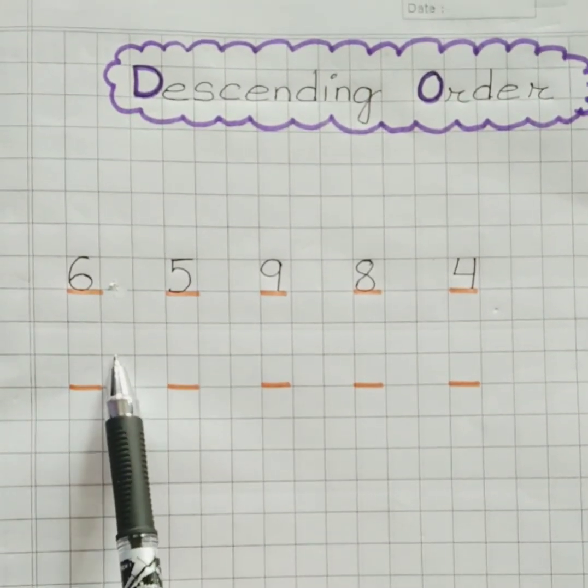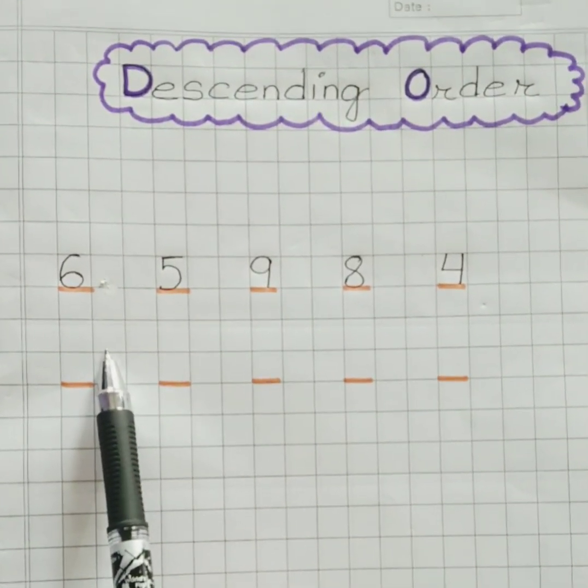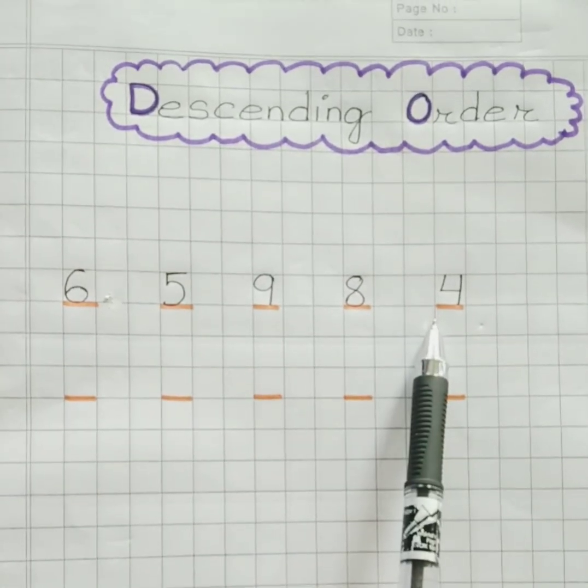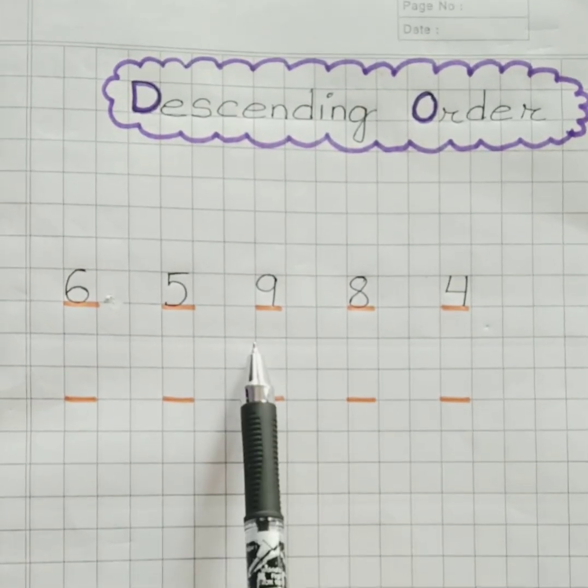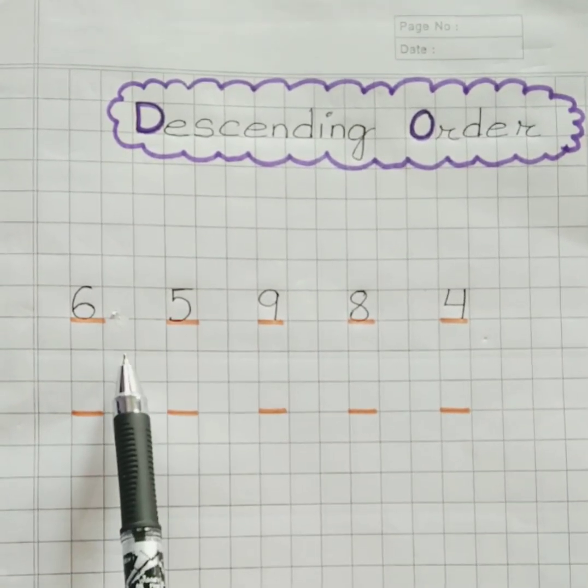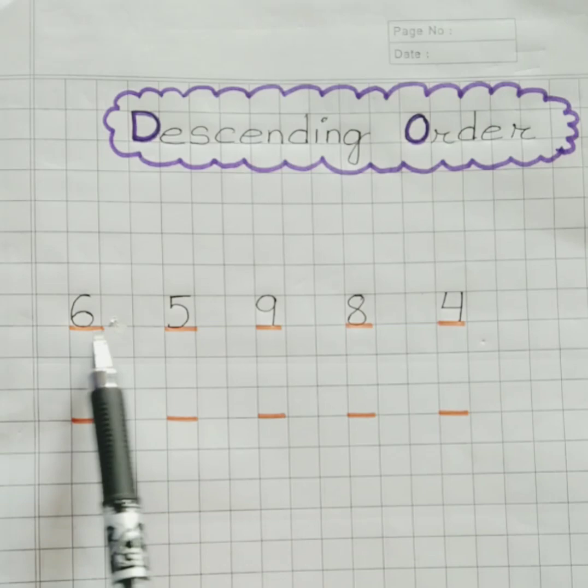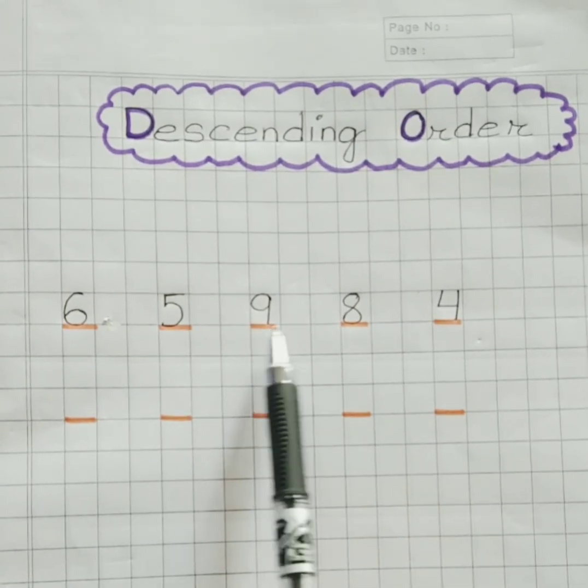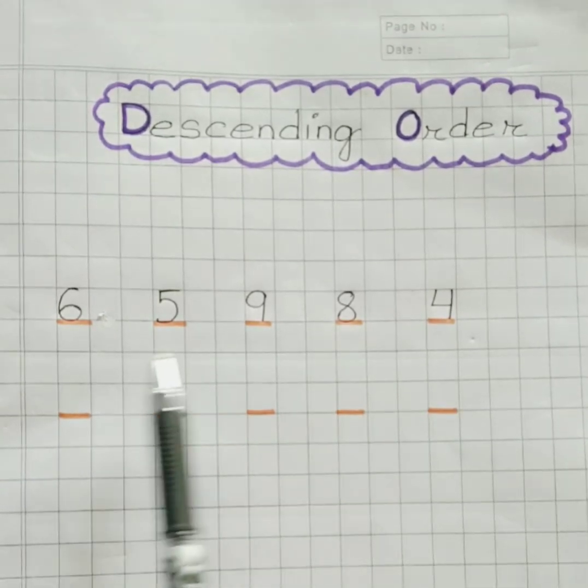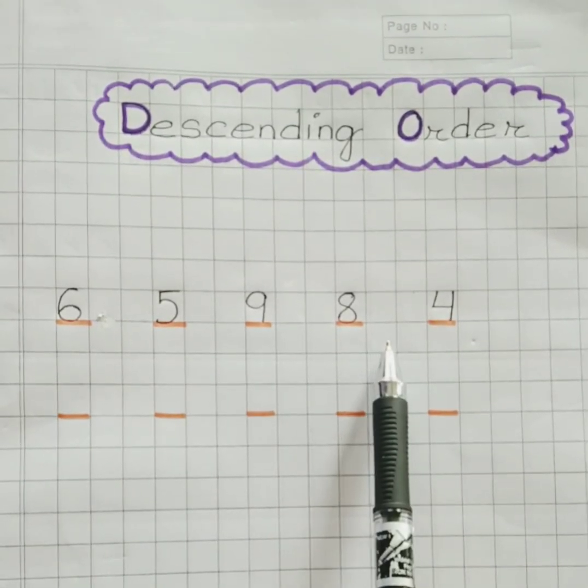So let's solve this problem now. Here we have a group of numbers which are jumbled up. We have to arrange them in descending order. So here we have numbers: 6, 5, 9, 8, and 4. You have to arrange these numbers in descending order.